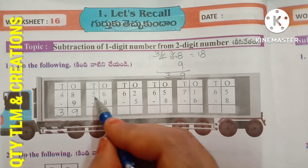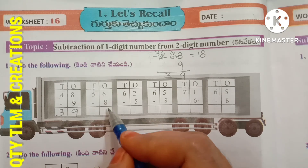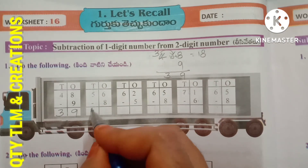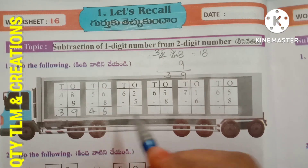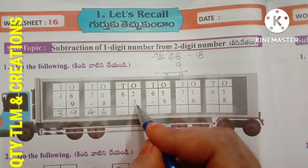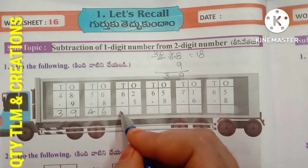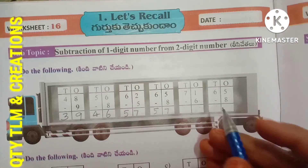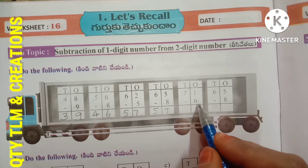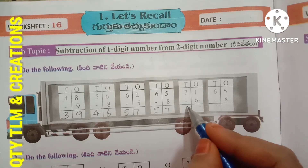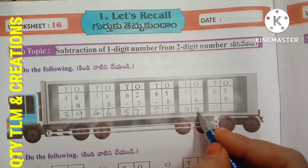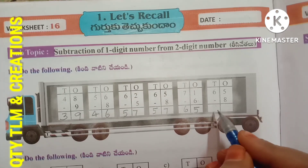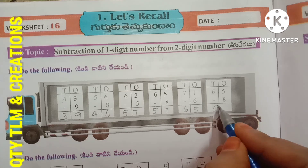56 minus 8 gives 48. 62 minus 5 gives 57. 71 minus 6 gives 65. 65 minus 8 gives 57.